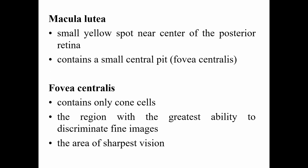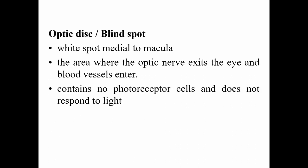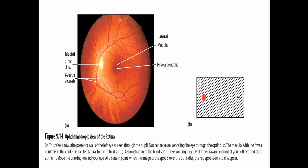The macula lutea is the yellow spot near the center of the posterior retina. It contains a small central pit called the fovea centralis, which contains only cone cells and is the region with the greatest ability to discriminate fine images — the area of sharpest vision. The optic disc, or blind spot, is a white spot medial to the macula — the area where the optic nerve exits the eye and blood vessels enter. It contains no photoreceptor cells and does not respond to light.